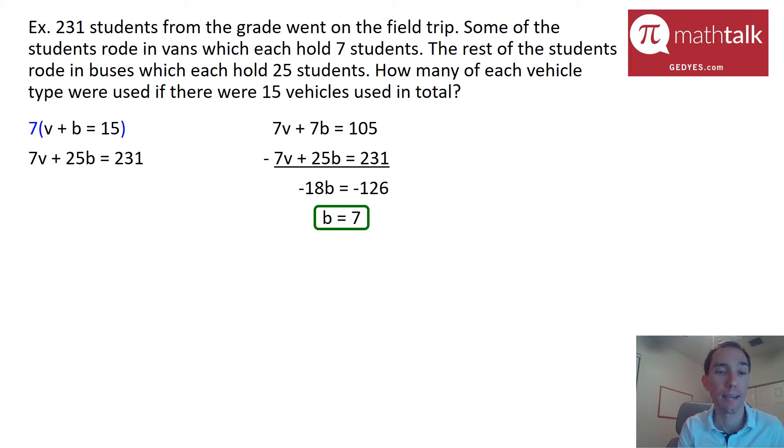So great. There's 7 buses. Now I've got to use that to figure out how many vans there are. So going back to my original first equation of vans plus buses is 15, I can now plug in 7 for buses and then figure that out. So I just got to subtract 7 from both sides and then I get vans equals 8, which means looking at each of the types of vehicles, I have 8 vans and 7 buses. Fantastic.